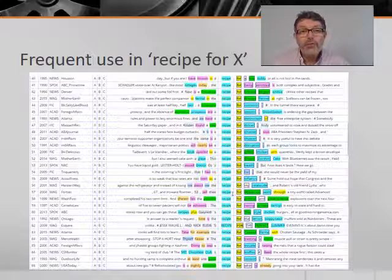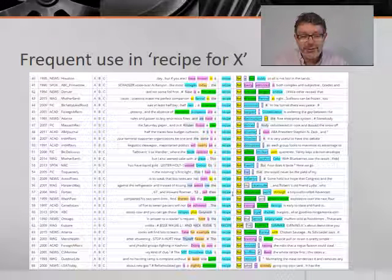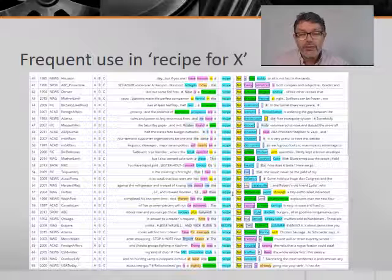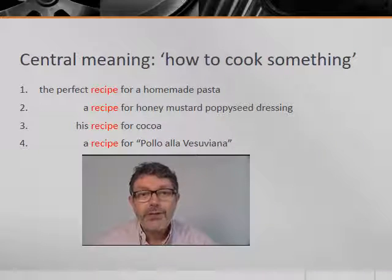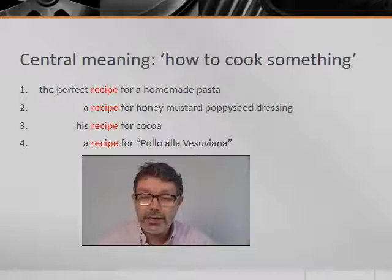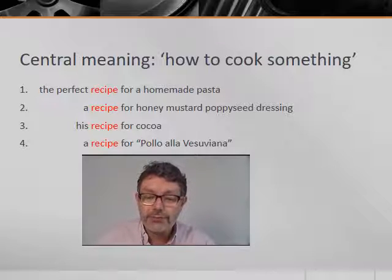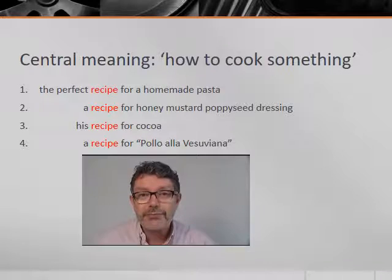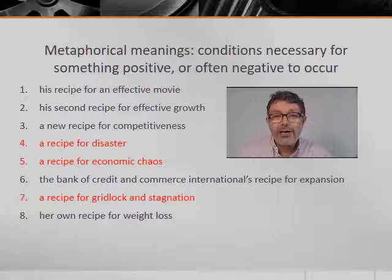However, if we scroll down the screen to examples of recipe for, the pattern changes slightly. Here, as well as examples like recipe for a hot toddy, we find examples like recipe for destruction or recipe for political and government explosions. So, particularly when we use the preposition for after recipe, we can distinguish between the central meaning of how to cook something and the metaphorical but fairly typical meaning of an idea or method for getting a particular result. A selection of the central or literal meanings are shown on this slide, and some of the metaphorical meanings are shown on this slide.